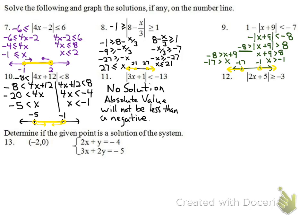Number 12: the absolute value is greater than or equal to a negative number. Since an absolute value is always positive, it will always be greater than any negative number — no matter what x is plugged in. So the answer is all real solutions.